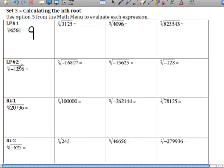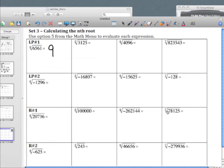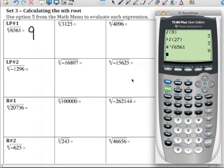And I just want to show you what happens on this one down here. I have another index of 4, hit math, choose choice 5, and type in negative 1,296. Hit enter. And I have a non-real answer.